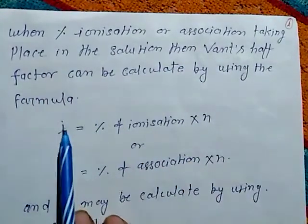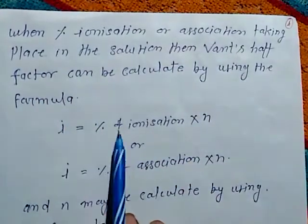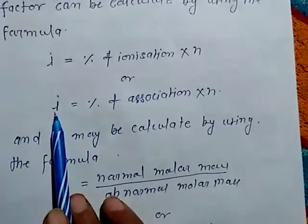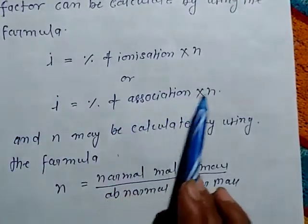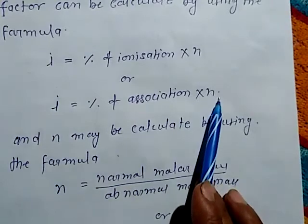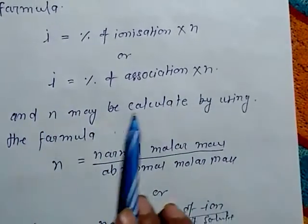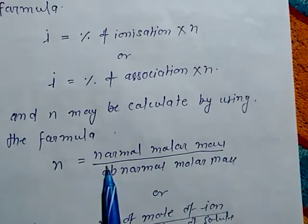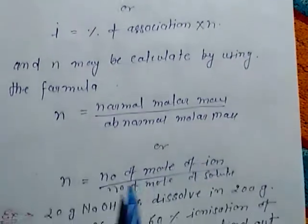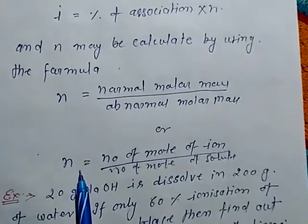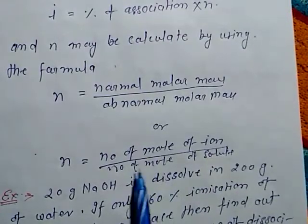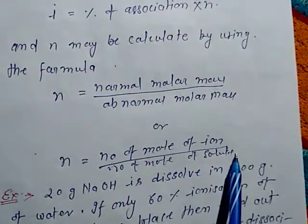When percentage ionization or association is taking place in the solution, the Van't Hoff factor can be calculated using: i = (percentage of ionization × n), or i = (percentage of association × n), where n = normal molar mass / abnormal molar mass, or the number of moles of ions upon number of moles of solute.